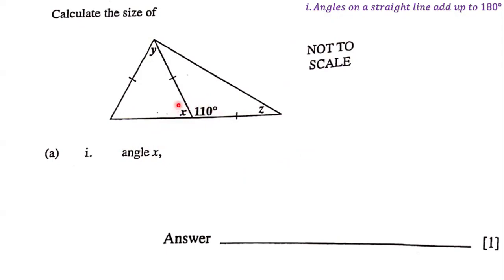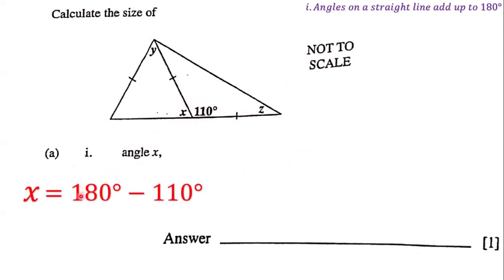That means that X plus 110 degrees add up to give us 180 degrees. So if we want to determine the size of angle X, we subtract: 180 minus 110, and that gives us 70. So angle X is 70 degrees.